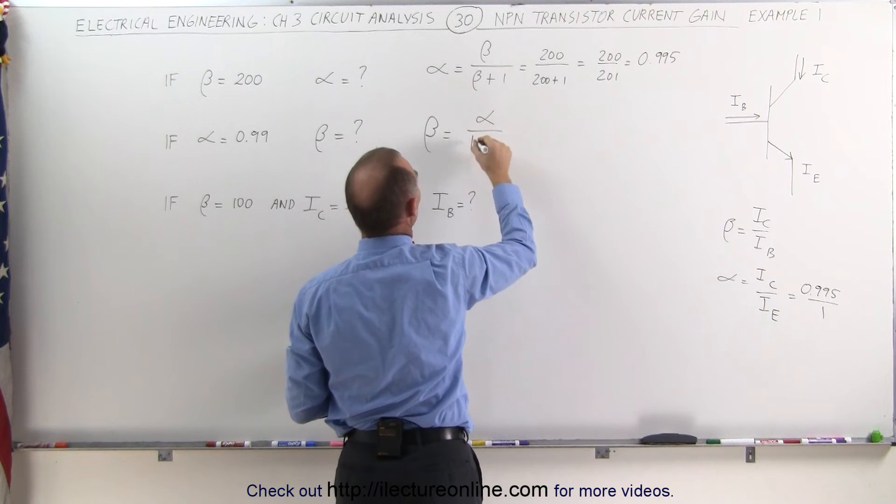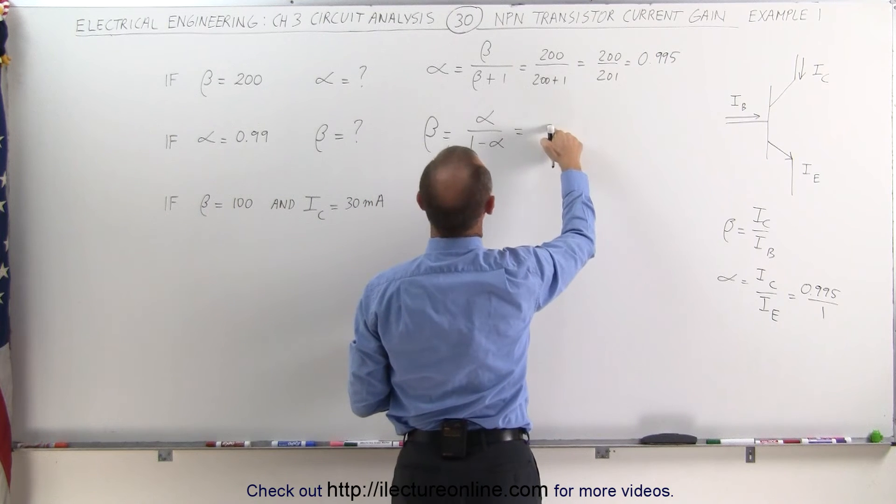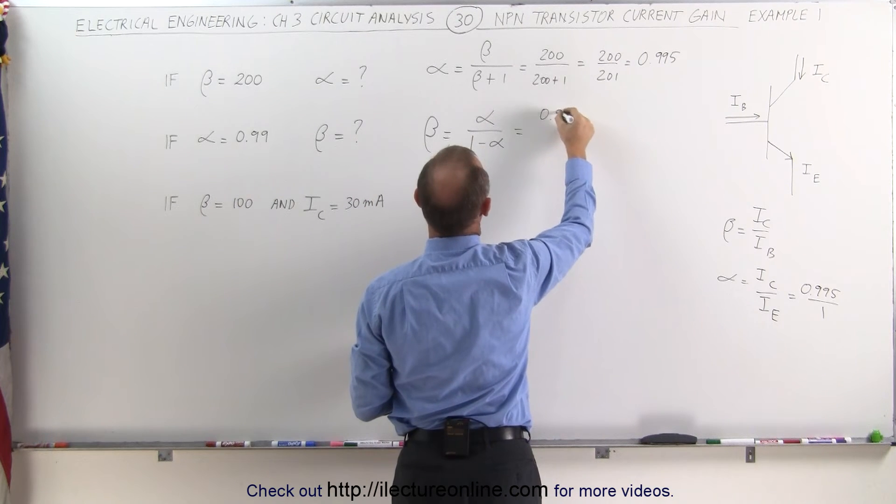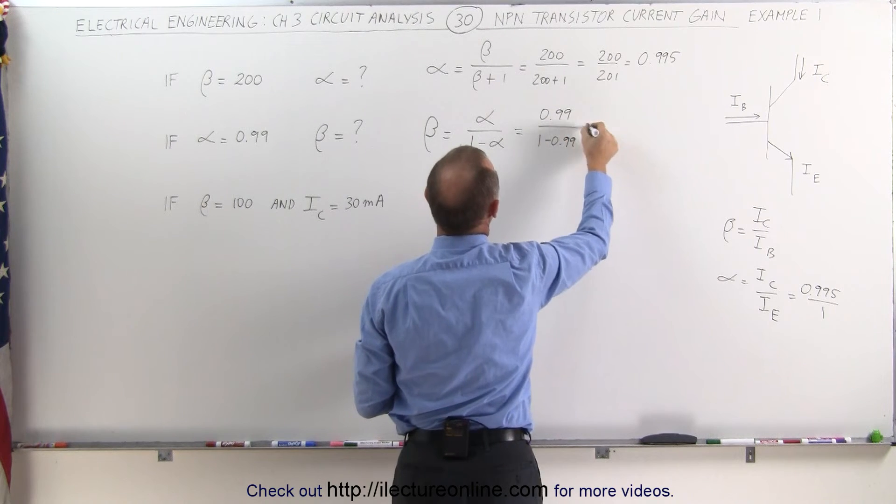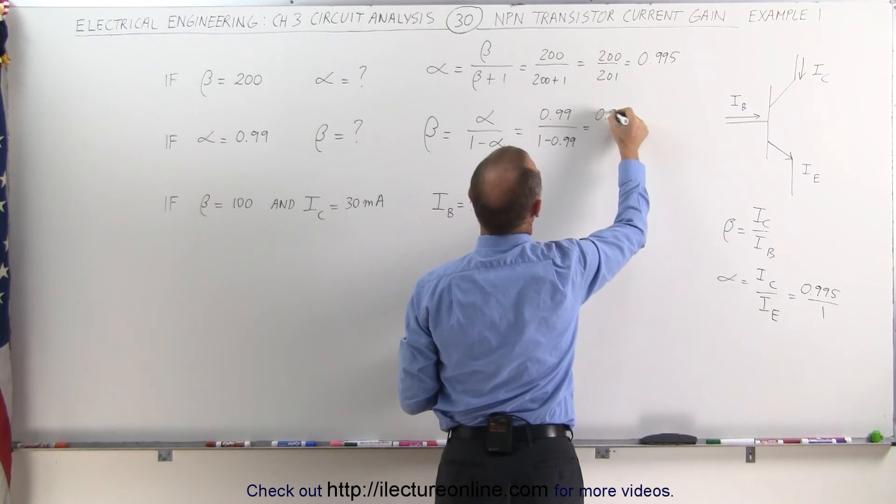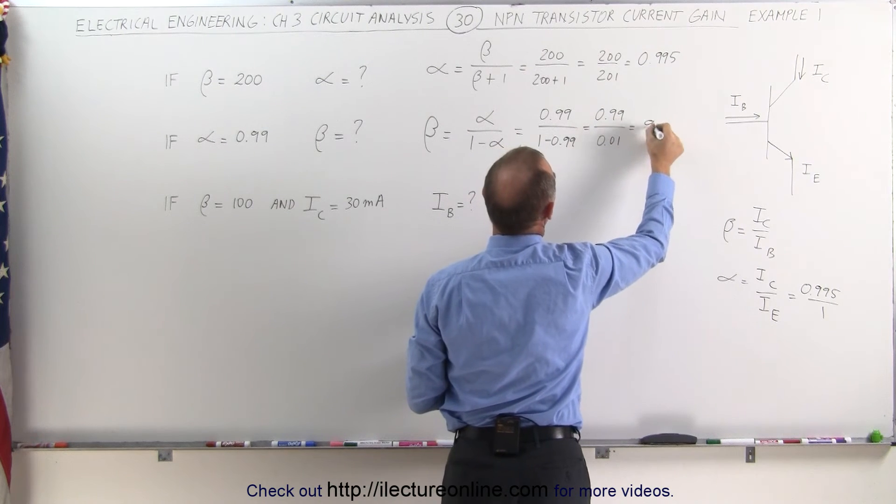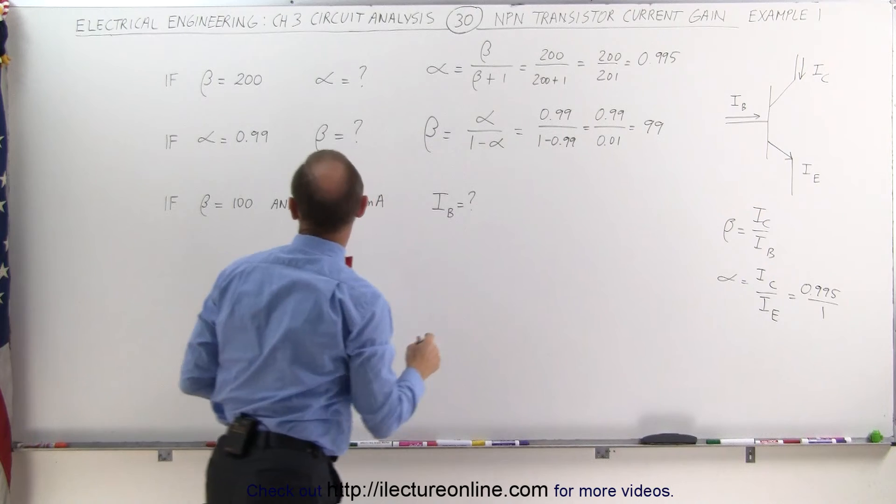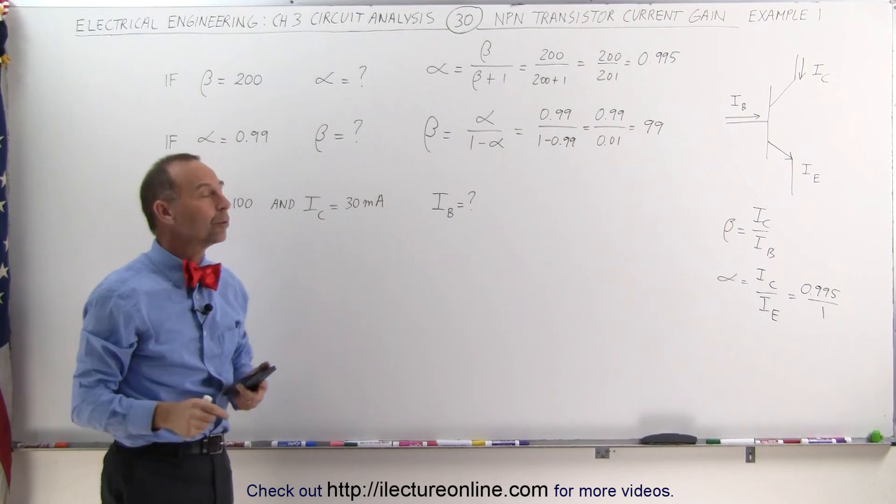Not alpha minus 1, but 1 minus alpha. So in this case, alpha is equal to 0.99 and 1 minus 0.99 is equal to 0.99 divided by 0.01, which is equal to 99. Which means if alpha is equal to 0.99, then beta is approximately equal to 100.